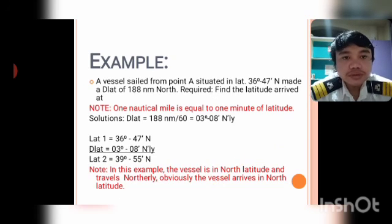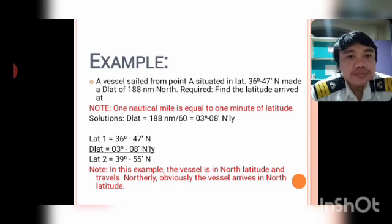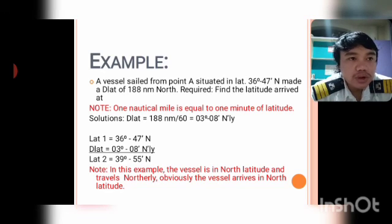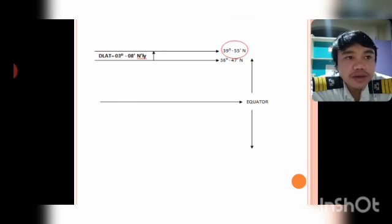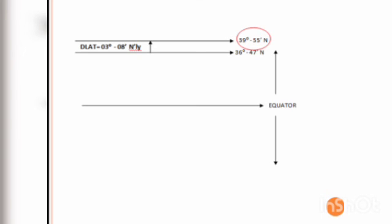The vessel is in the northern hemisphere and the direction of the difference of latitude is northward, so we add. The departure latitude is 36 degrees 47 minutes north, and the converted difference of latitude is 03 degrees 08 minutes north. Therefore, the latitude of arrival is 39 degrees 55 minutes north.